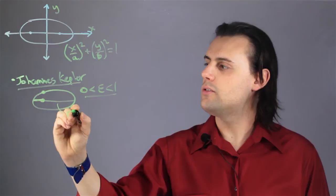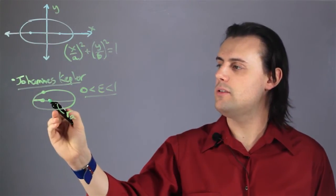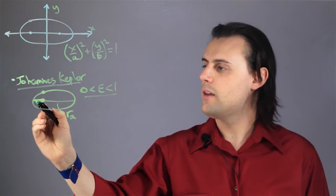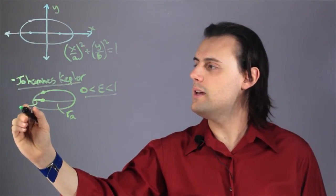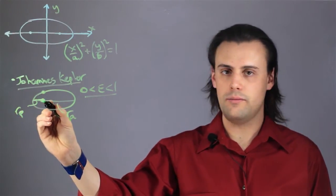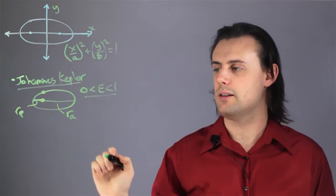This would be R sub A, which is the apoapsis. It's the furthest distance away from the star. And then this would be the periapsis. If it's the sun, then this would be called aphelion and this would be perihelion.